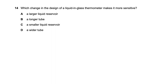Question fourteen asks which change in design makes a liquid-in-glass thermometer more sensitive. A larger liquid reservoir means more thermal expansion per degree, making the thermometer more sensitive. A longer tube gives a longer range, and a wider tube actually decreases sensitivity. So a larger liquid reservoir is the correct answer.